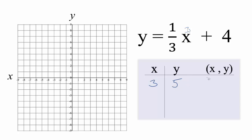How about zero is always a good number. So we'll put zero in, one-third times zero, that's zero. Zero plus four gives us four.